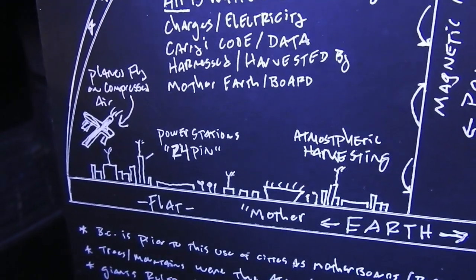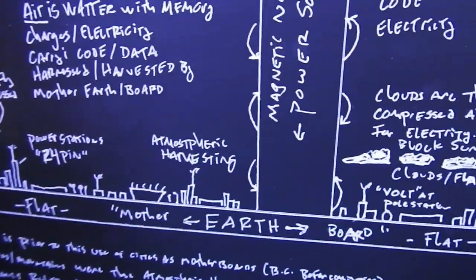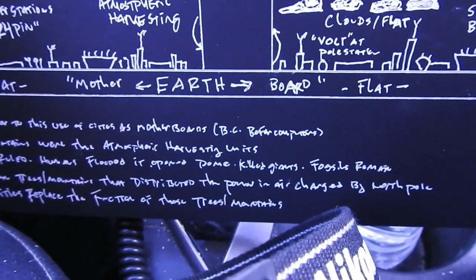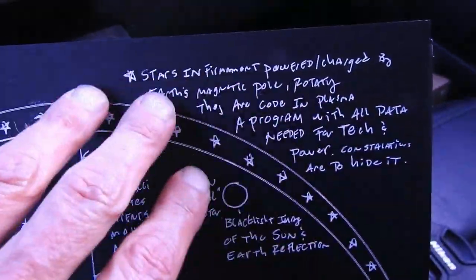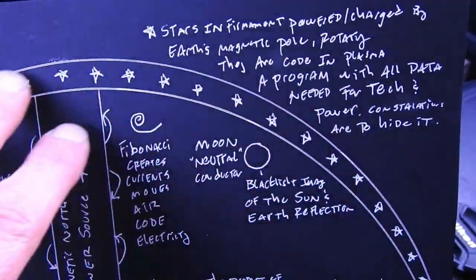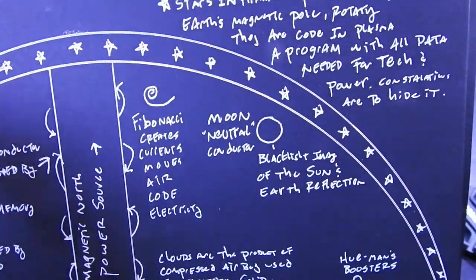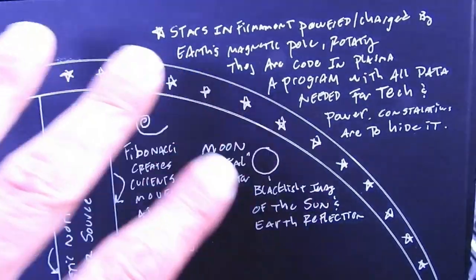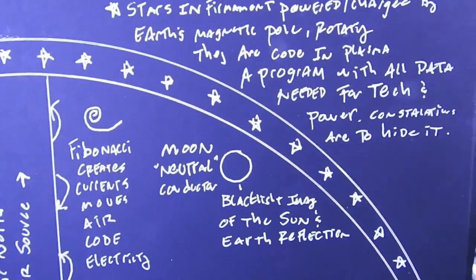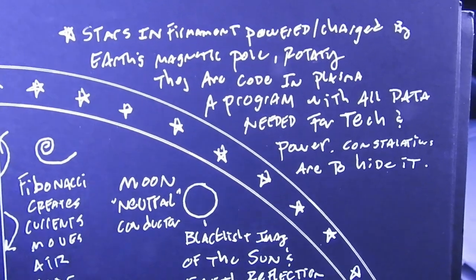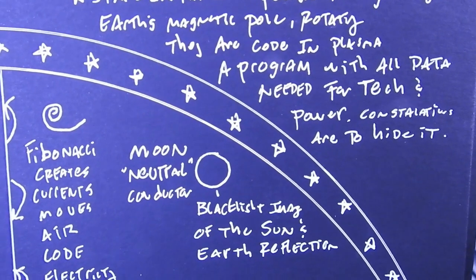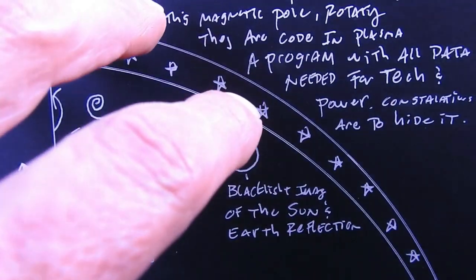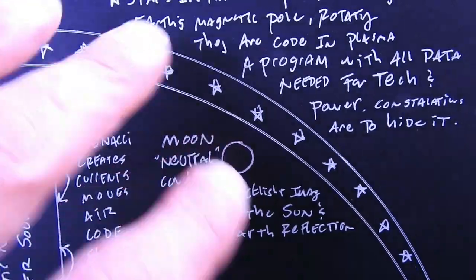They don't fly — they hover like a bumblebee. Then you've got the stars, which are in the firmament. They're a program, they're in plasma — like your plasma TVs. They work the same way, charged through this circuit.